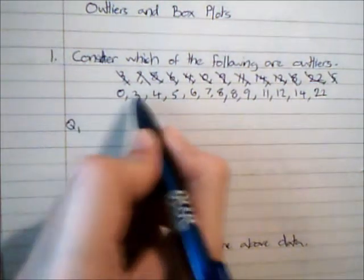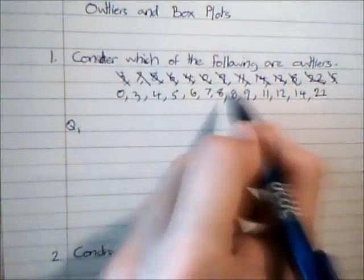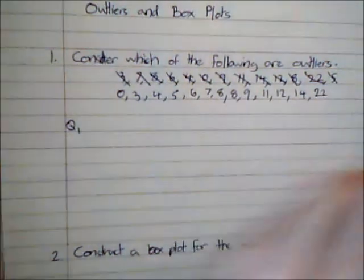So for Q1, I've got 1, 2, 3, 4, 5, 6, 7, 8, 9, 10, 11, 12, 13 bits of data.